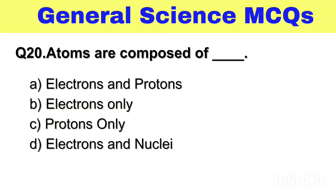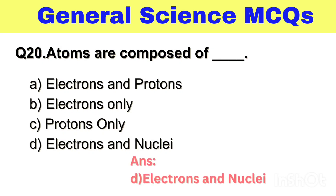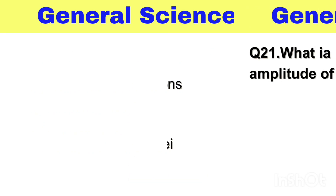Question No. 20. Atoms are composed of — Option A. Electrons and Protons, B. Electrons only, C. Protons only, D. Electrons and nuclei. The right answer, Option D. Electrons and nuclei.